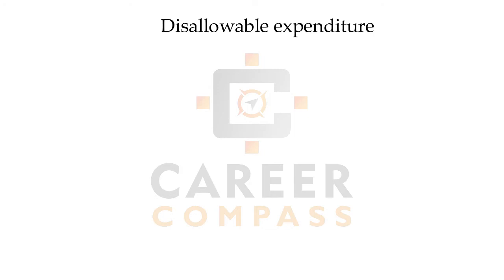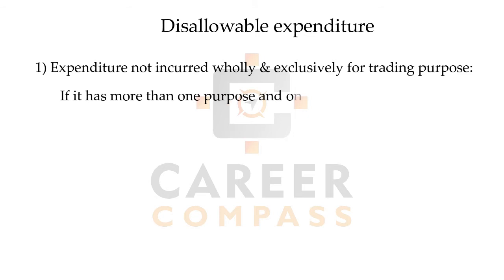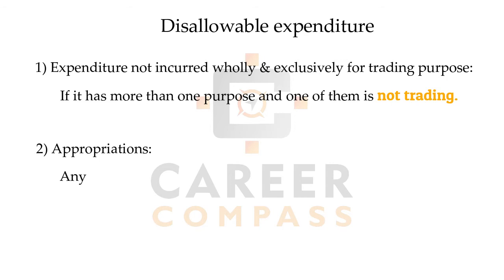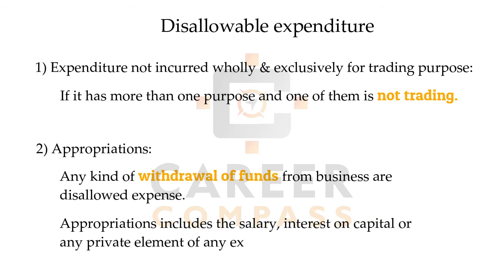The first disallowable item is any expenditure not incurred wholly and exclusively for a business purpose — any proportion used for private purposes will be disallowed. The second is appropriations: any appropriation in the form of salary or interest paid to the owner or partner is not allowable expenditure and must be added back.